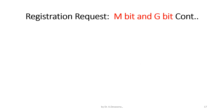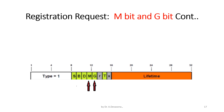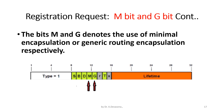The M-bit and G-bit fields in the registration request are indicated by the arrow mark in the diagram. The bits M and G denote the use of minimal encapsulation or generic routing encapsulation respectively.